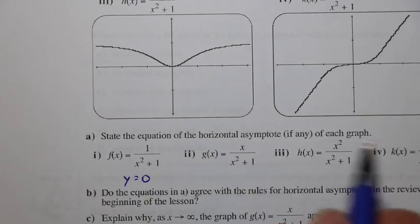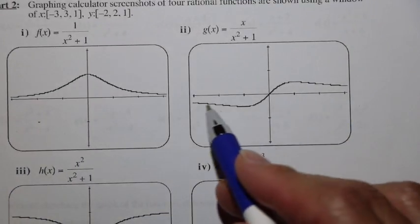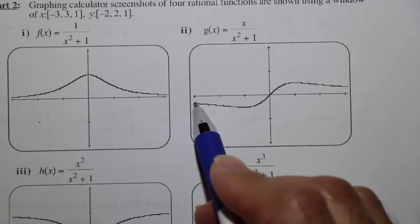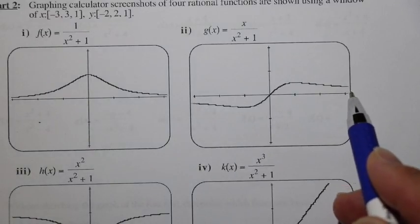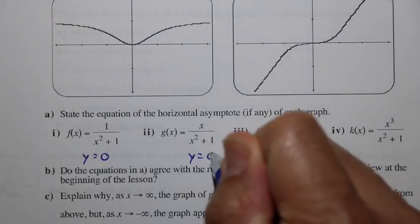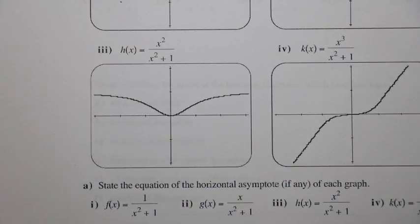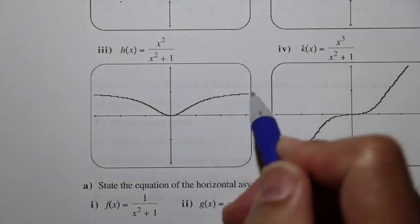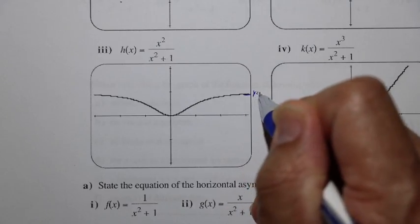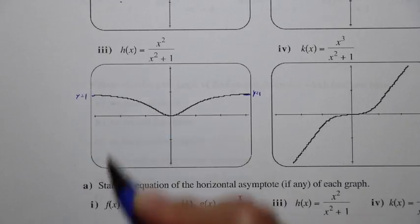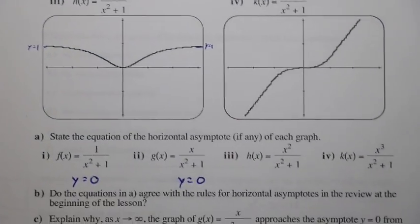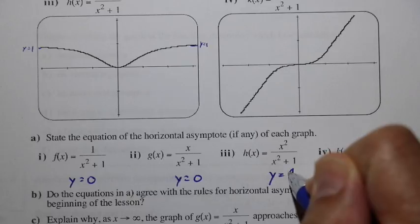For g(x) = x/(x² + 1), which has an S-shaped graph, even with different concavity, the graph approaches zero in both directions — so again the horizontal asymptote is y = 0. For h(x) = x²/(x² + 1), the end behavior on both sides tends toward y = 1, so the horizontal asymptote is y = 1.